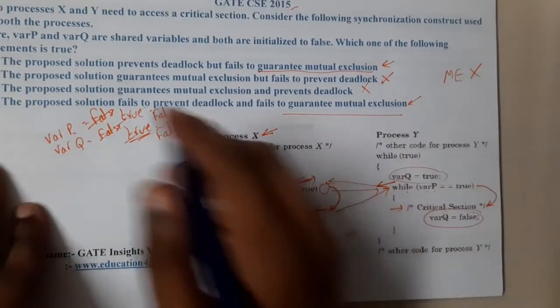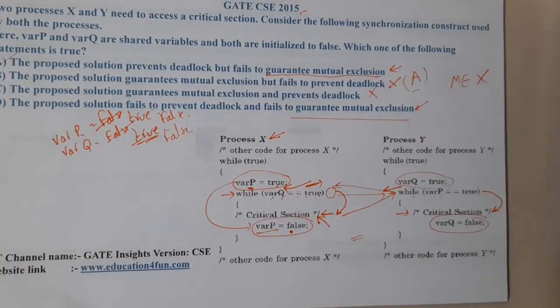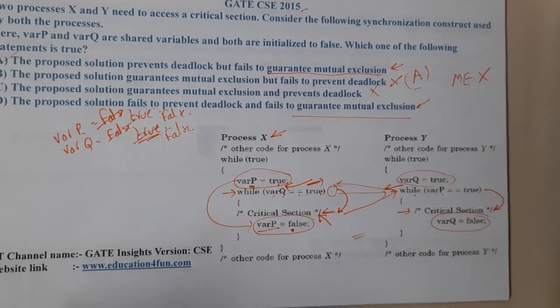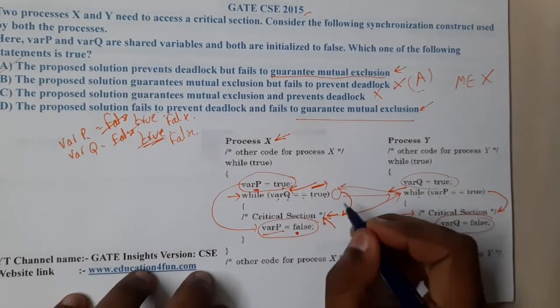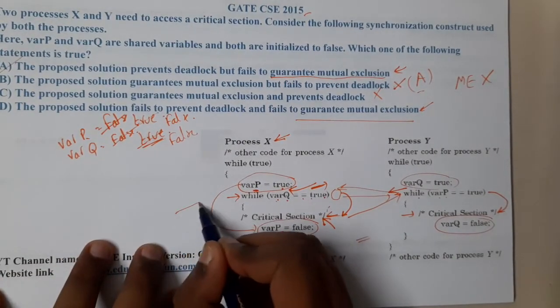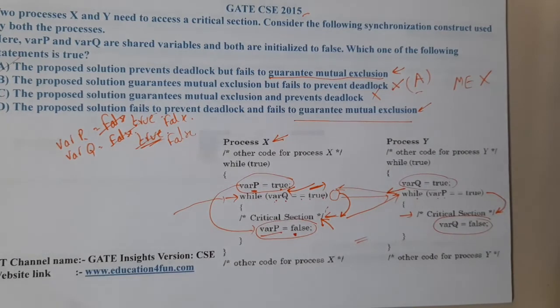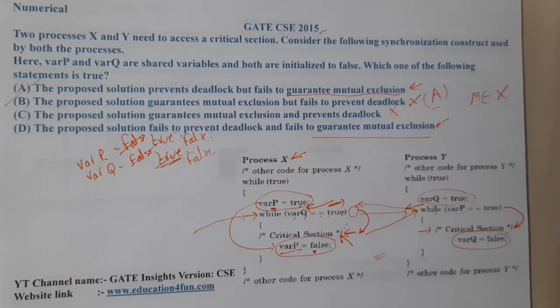With that we can conclude that A is the correct answer. It's a quite interesting and easy question. The only thing is this code is completely new for us because they removed the semicolon. Most students I think might have taken that semicolon blindly and solved it, and they could end up with wrong answer. Please concentrate by solving these types of questions.